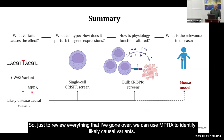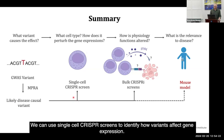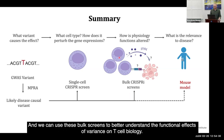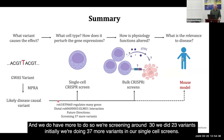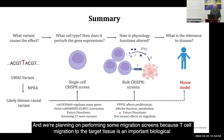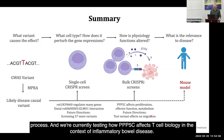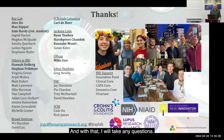Just to review everything: we can use MPRA to identify likely causal variants, we can use single-cell CRISPR screens to identify how variants affect gene expression, and we can use bulk screens to better understand the functional effects of variants on T cell biology. We do have more to do — we did 23 variants initially, we're doing 37 more variants in our single-cell screens, and we're planning on performing some migration screens because T cell migration to the target tissue is an important biological process. We're currently testing how PPP5C affects T cell biology in the context of murine inflammatory models. With that, I will take any questions.